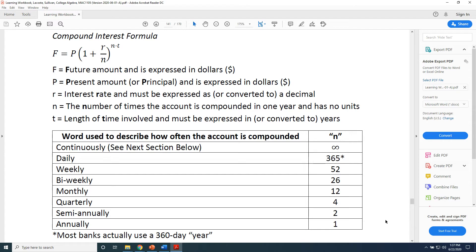Now let's look at some words that describe how an account can be compounded. Skipping the first row, we see that daily, weekly, bi-weekly, monthly, quarterly, semi-annually, and annually are our options.